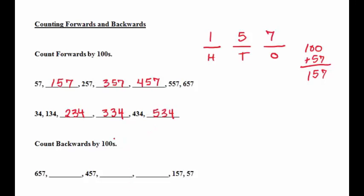Now in our last example, we're going to count backwards by 100. So the exact same rules apply, but since we're going backwards, the numbers are going to get smaller, not bigger.